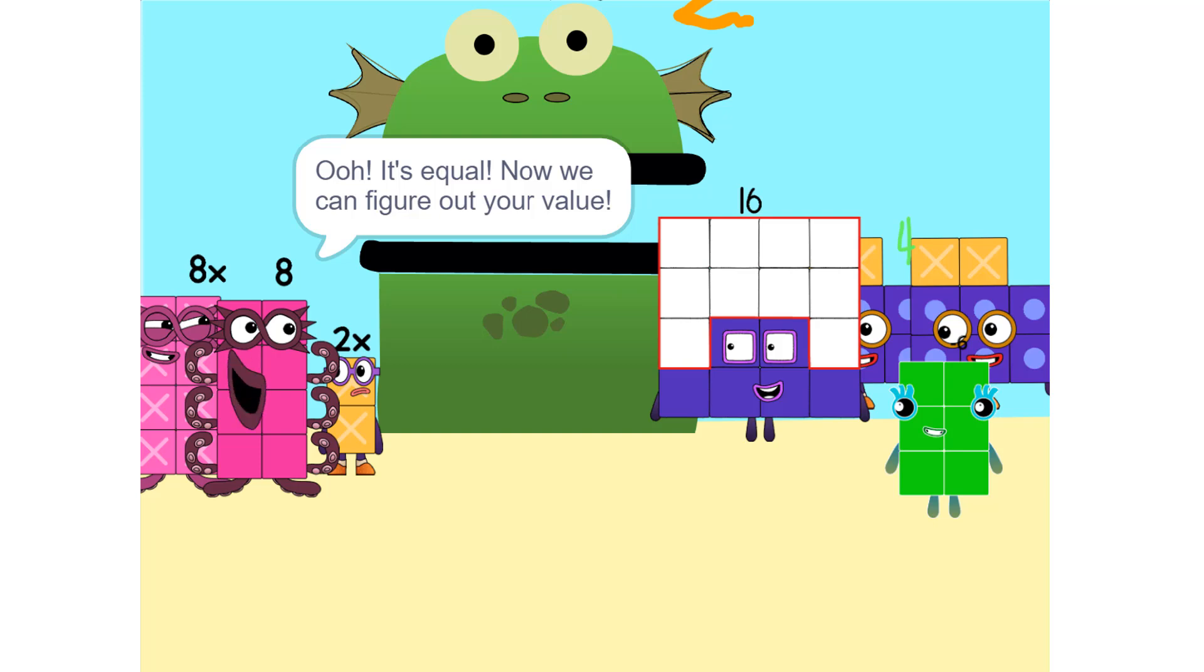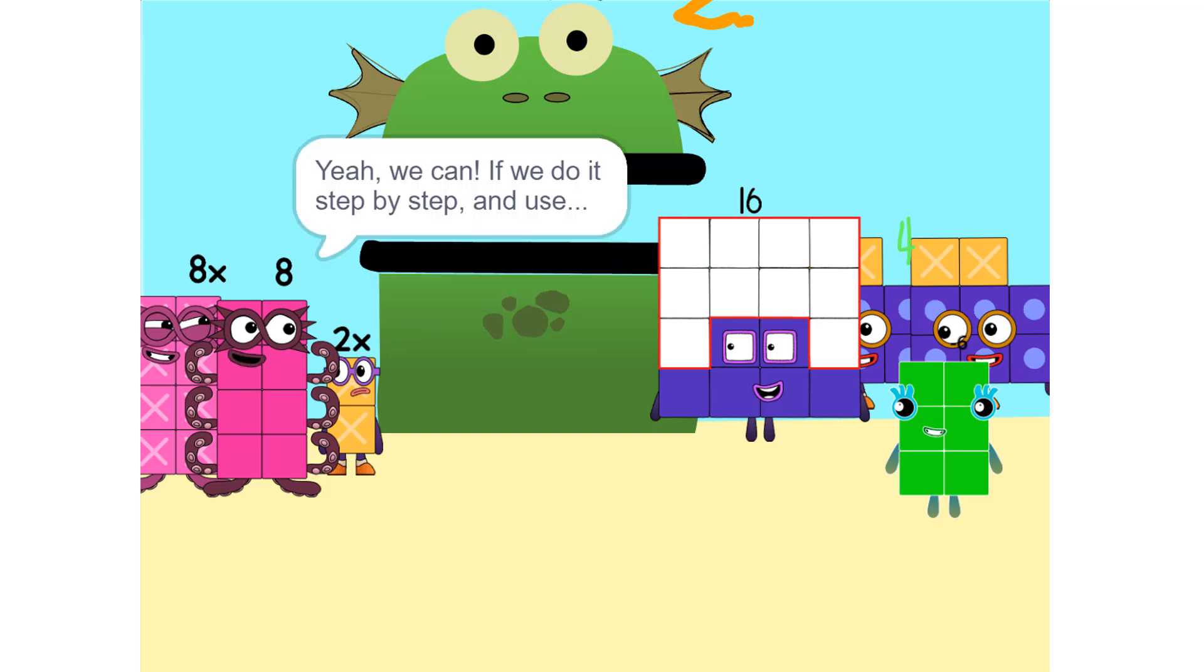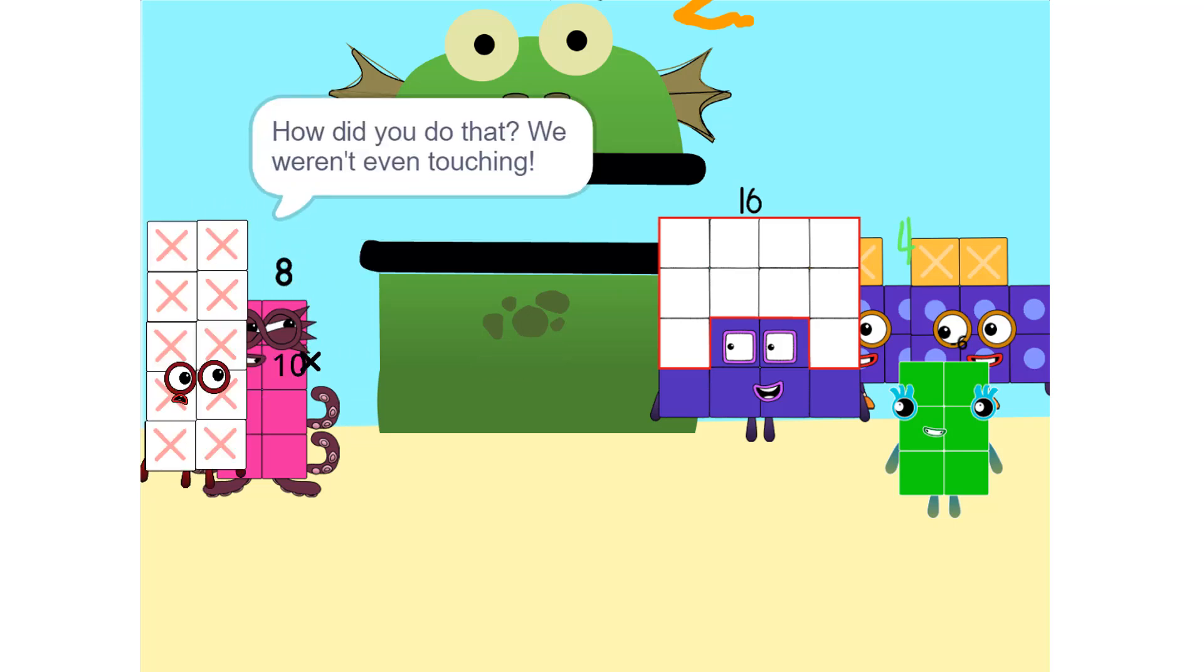But 8, there are too many numbers. We'll never figure it out. Yeah, we can. If we do it step by step and use a pencil. So let's get started. One thing we can do is add these two together. How did you do that? We weren't even touching.